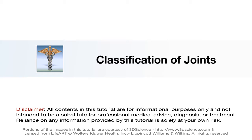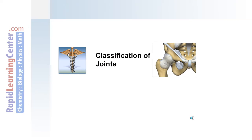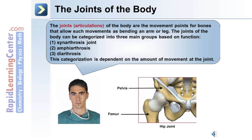Now we'll move on to discuss the articulations or joints. This is where bones come together and allow movement in the body. We'll begin with the classification of joints. The joints or articulations of the body are the movement points for bones. They allow for such movements as bending an arm or leg. This image shows the hip joint between the pelvis bones and the femur.